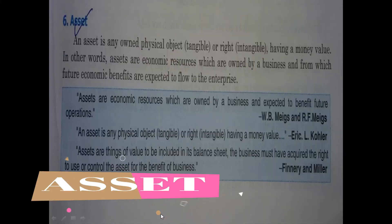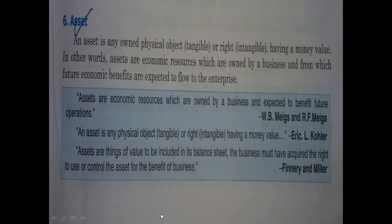Next is asset. Assets are very important in the balance sheet. Whatever physical or tangible objects the business owns — such as plant, machinery — are assets. Every physical object, tangible and intangible, having a money value is an asset. In other words, assets are economic resources owned by a business from which future economic benefits are expected to flow to the enterprise. According to Finne and Miller's definition, assets are things of value included in the balance sheet; the business must have acquired the right to use or control those assets for the benefit of the business.